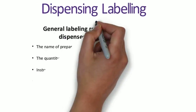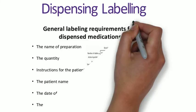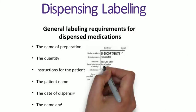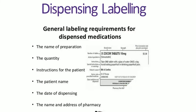For dispensed medicinal products — those dispensed against a prescription — standard labelling requirements do not apply. Ideally, you should dispense medicine in the original package and add the dispensing label to it. If it's already in its original package, it will have the standard labelling, and the dispensing label will carry just the details required for dispensing.